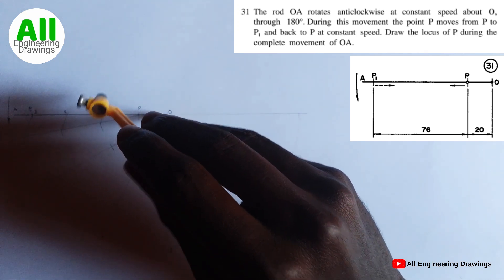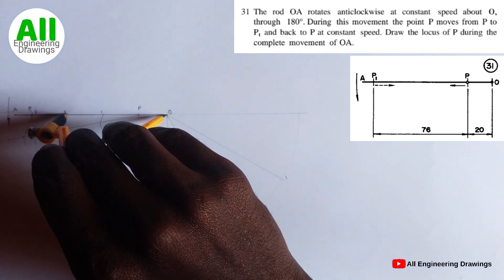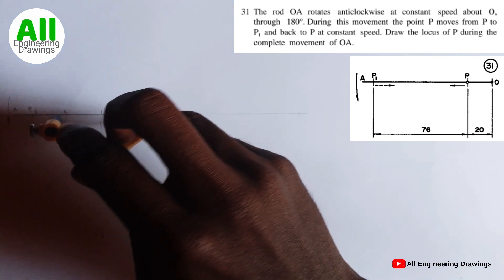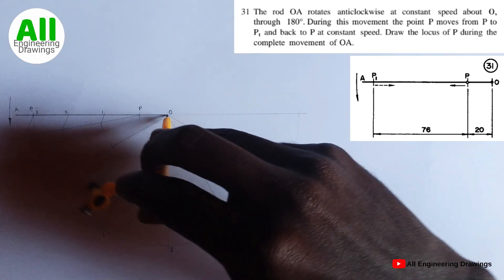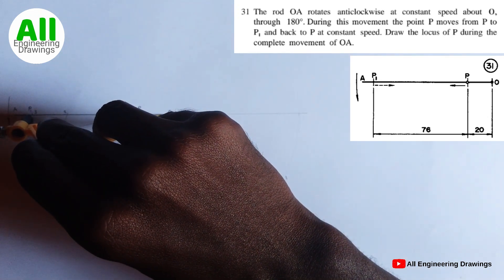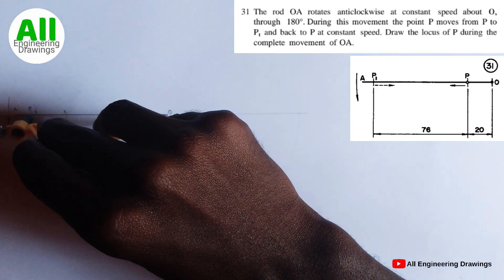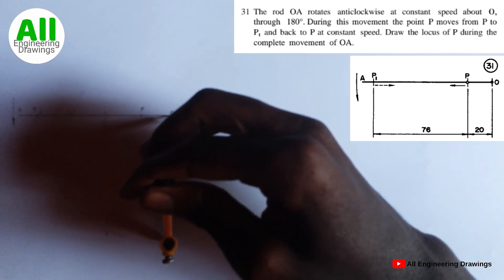After that, adjust your compass to point 2, then cut an arc on line 2, then adjust the compass to point 3, then you can cut an arc on line 3. So the arc will be on the circumference of your semicircle.